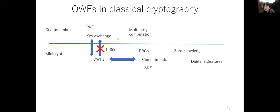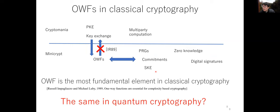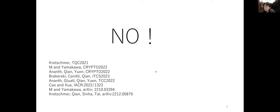In complexity-based classical cryptography, it is well-known that one-way functions are the most essential element, because almost all classical cryptographic primitives imply one-way functions. Therefore, if one-way functions do not exist, neither do these primitives. The question is: is this also the case in quantum cryptography? Recent results, including our papers, show that in quantum cryptography, one-way functions are not necessarily the most fundamental element. This is the main topic of my talk.